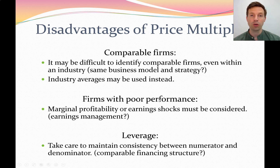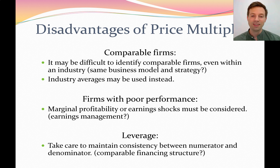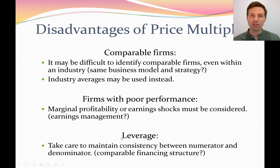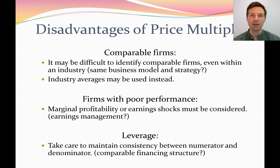Firms with poor performance — for example, if net profit is very low in a given year — will bias your price multiples. If there's earnings management or earnings shocks in a particular year, it leads to more inaccuracies in the valuation. Additionally, two firms selling similar products may have very different financing structures: one might be highly leveraged, the other might have no debt. Applying a price multiple between firms financed in very different ways doesn't make much sense, because equity holders get very different returns based on the leverage used.